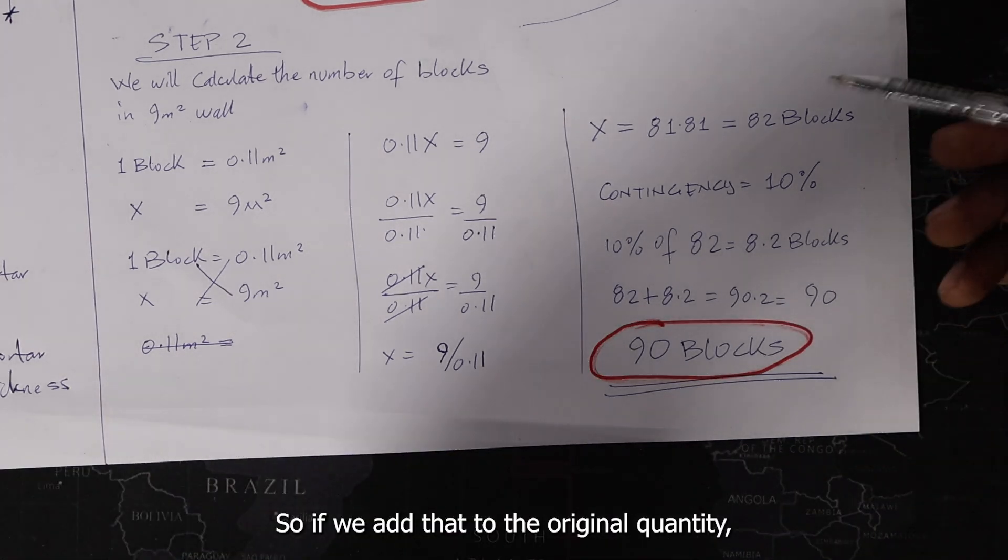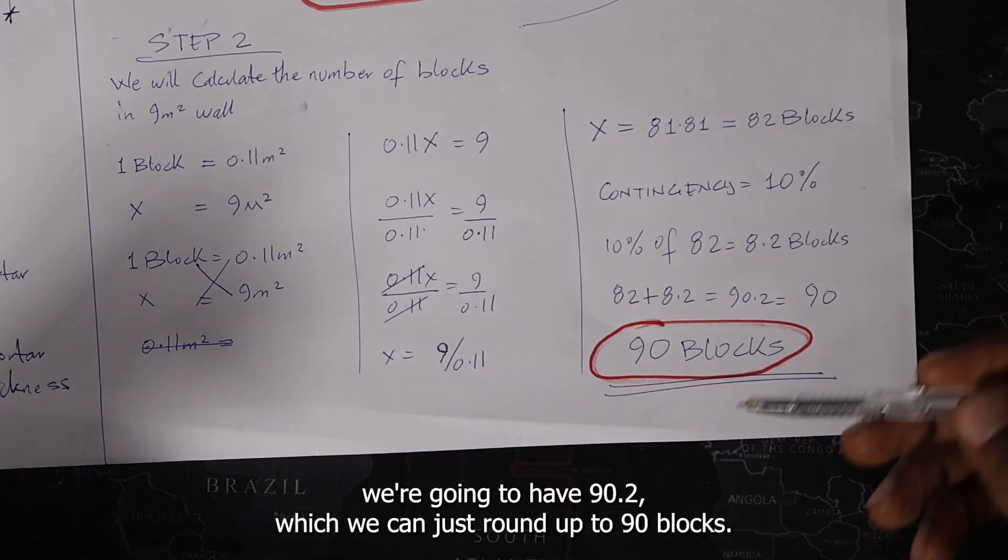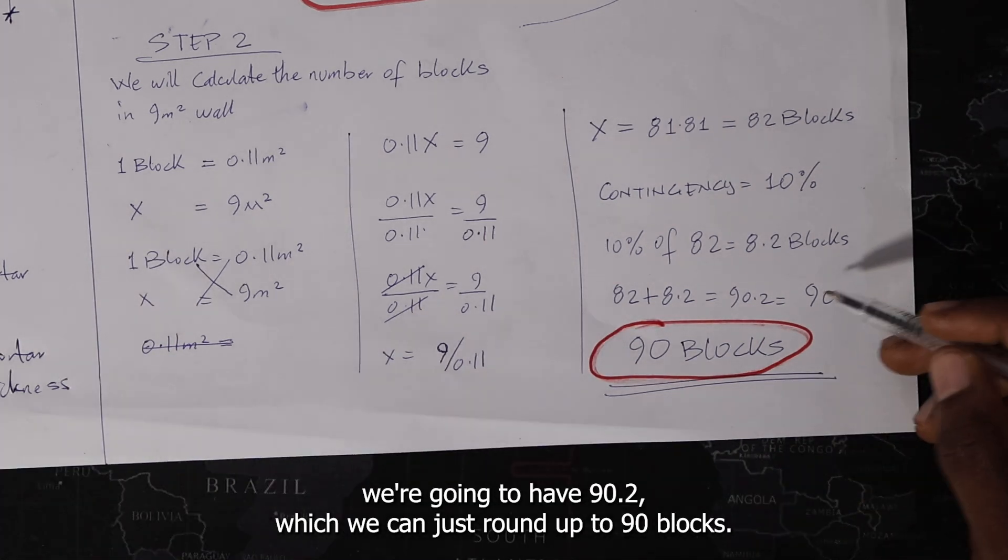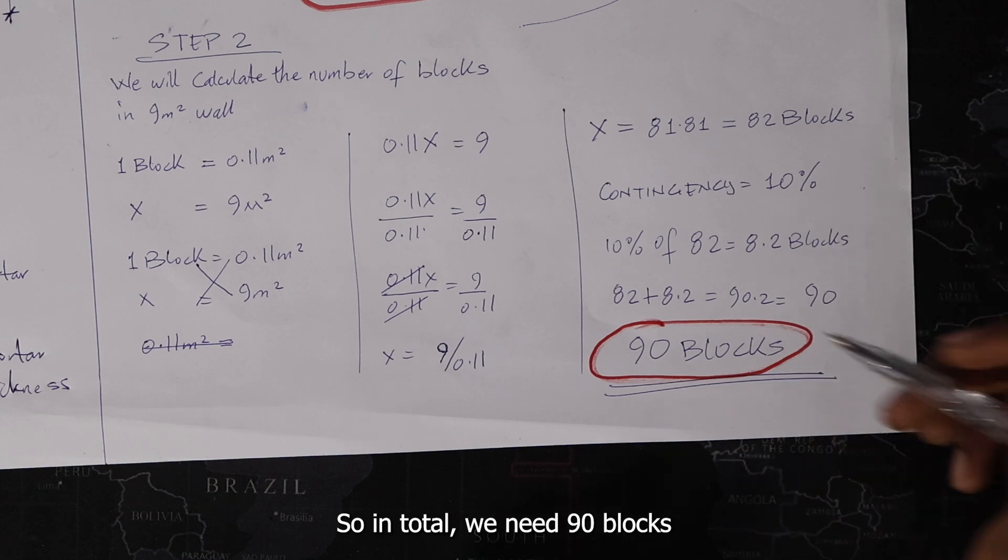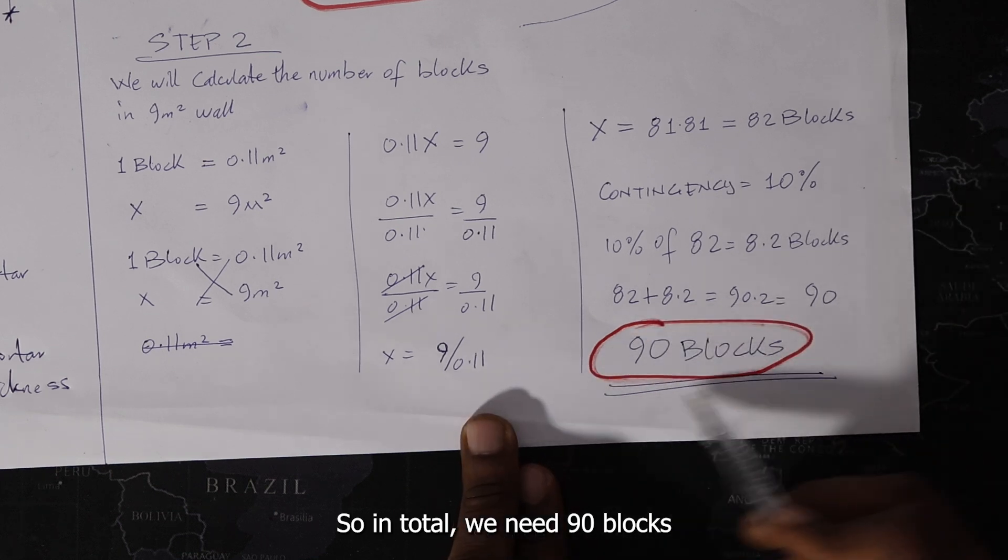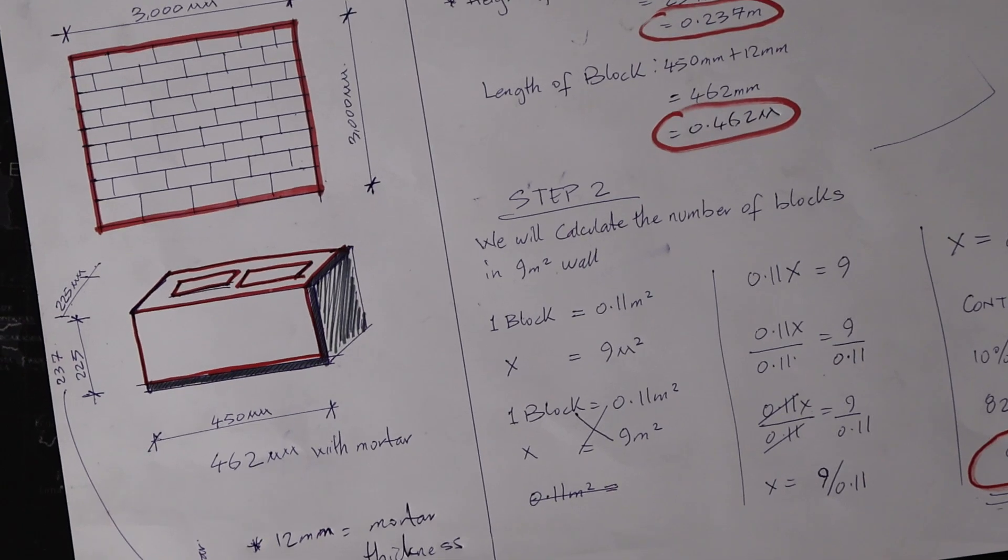So if we add that to the original quantity, we're going to have 90.2, which you can just round up to 90 blocks. So in total, we need 90 blocks for this entire wall.